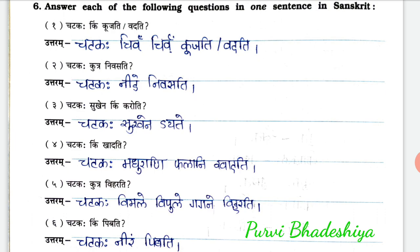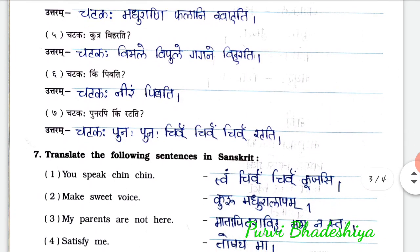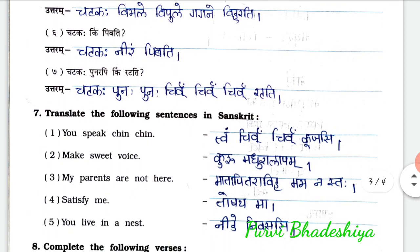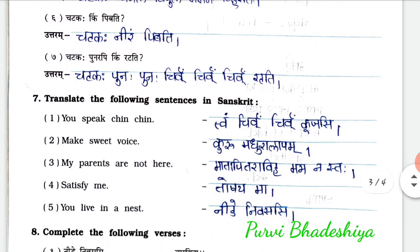Answer for 3rd: Chattakah sukhen dayate. 4th: Chattakah kim khadati? — answer is Chattakah madurani falani khadati. 5th: Chattakah kutra viharati? — answer is Chattakah vimale vipule gagane viharati. 6th: Chattakah kim pibati? — answer is Chattakah niram pibati.